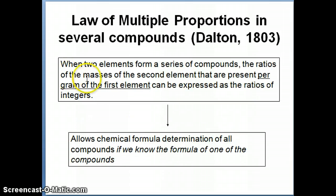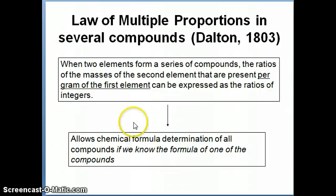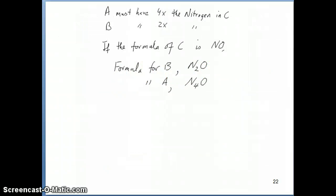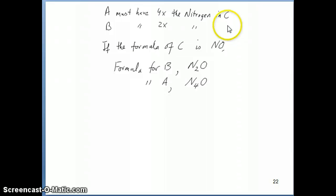If you remember back to the law of multiple proportions, what happens there is that when we have two elements forming a series of compounds — the example we used was nitrogen and oxygen — if we keep one of the elements to be one gram, in that case we kept oxygen to be one gram, then we find that the masses of the second element, which is nitrogen, can be expressed with respect to each other as integer ratios or ratios of whole numbers. Going back to that example, we actually have three compounds, all containing nitrogen and oxygen. We find that compound A has four times the number of nitrogen as in C, and B has twice the number of nitrogen compared to C.